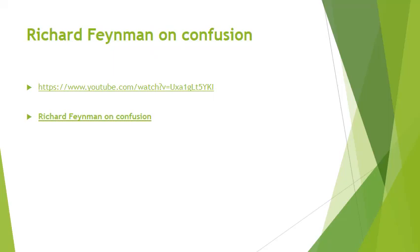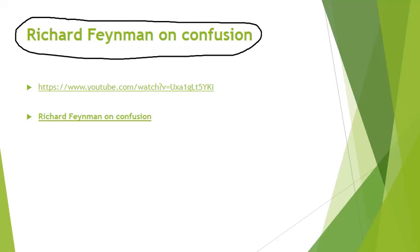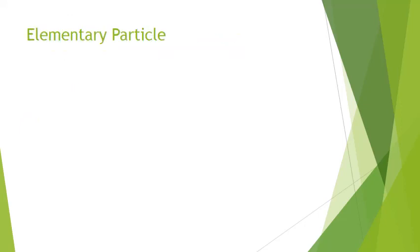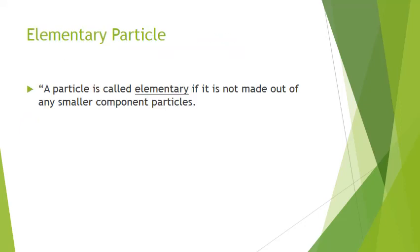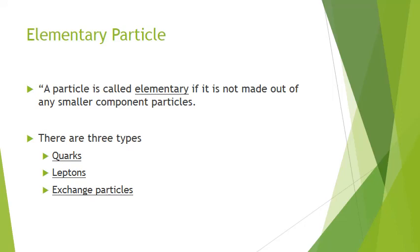If you have a second, you can Google or YouTube search Richard Feynman's video — Richard Feynman on Confusion — a funny clip as we dive into some things that can be a little confusing and interesting. Elementary particles are called that because those particles are not made out of anything smaller. We have three types: quarks, leptons, and exchange particles.